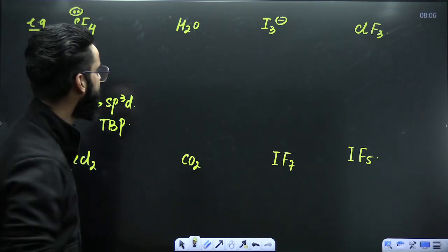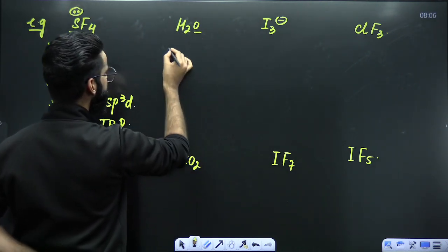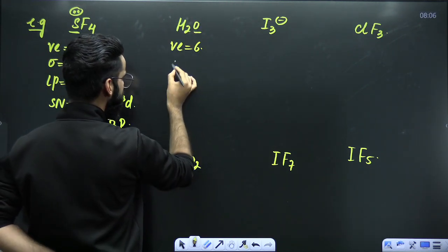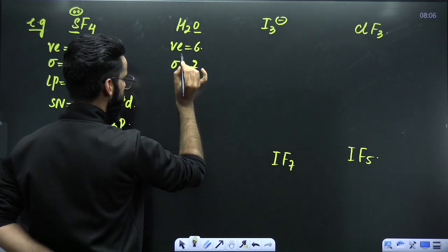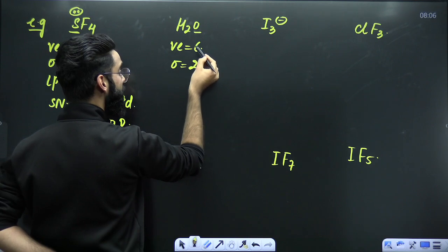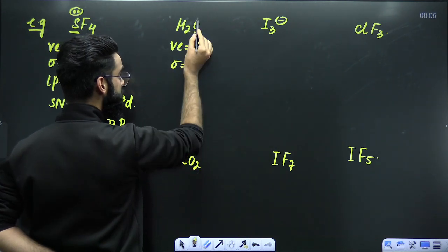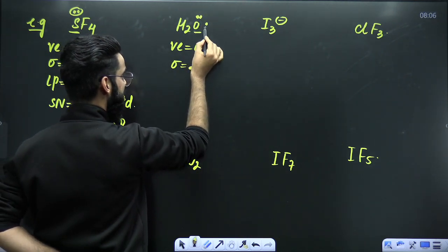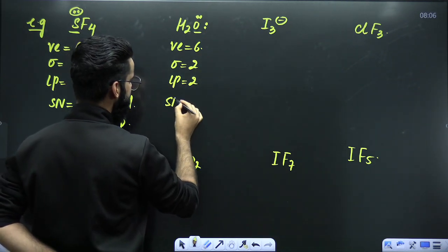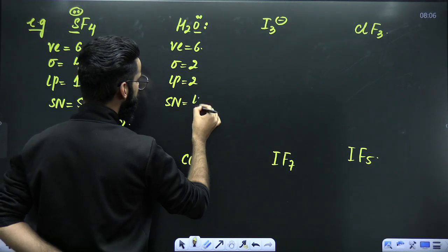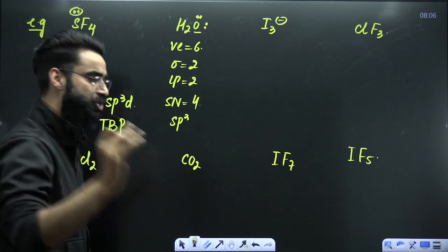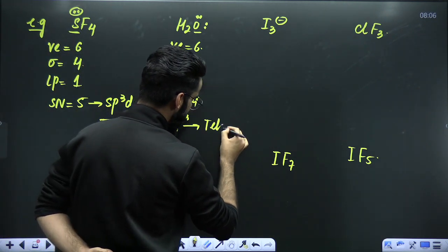Now take water. Oxygen is the central atom with 6 valence electrons and 2 terminal atoms, so it forms 2 sigma bonds. It uses 2 valence electrons for the sigma bonds, leaving 4 electrons as 2 lone pairs. Steric number is 2 plus 2 equals 4, so hybridization is sp3. The geometry predicted through hybridization is tetrahedral.